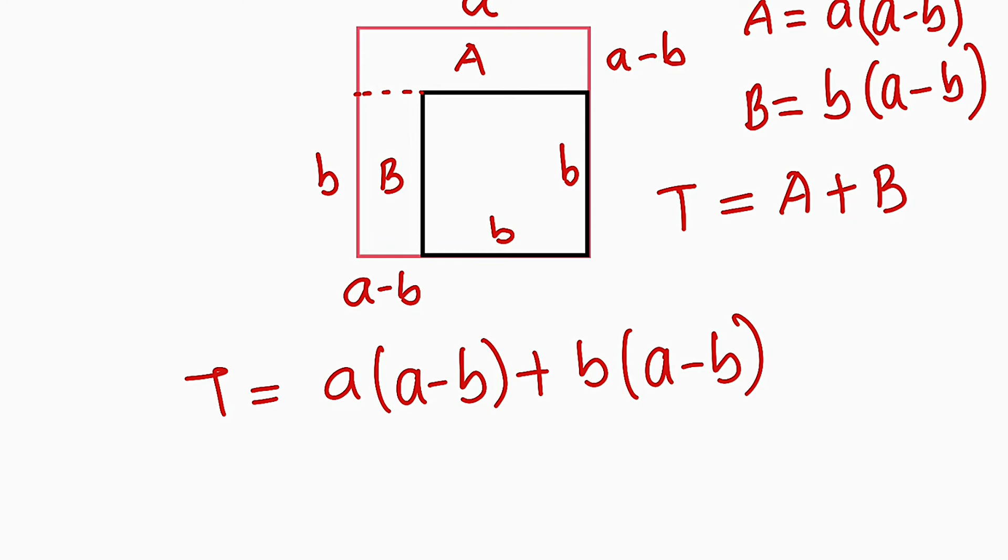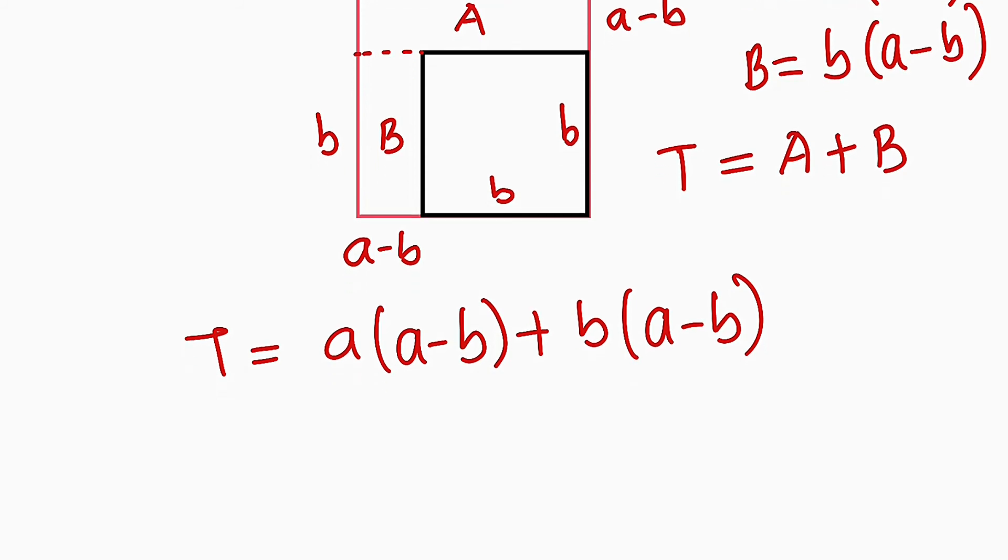All right, this is the area uncovered by b. But if you observe from the first and the second term, we have a minus b in common, so we can bring it out. We have a minus b. From the first term, if you factor a minus b, you will have a left, so this is a.